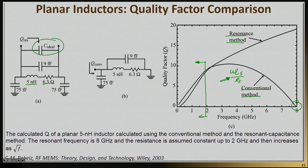At low frequencies the two Qs are roughly the same, since in both cases we are away from self-resonance, and this is a low-frequency approximation. But beyond that they deviate significantly. The most important deviation happens right at self-resonance, where they give two totally different messages. The conventional Q gives you a signal that at self-resonance the Q of the inductor is zero — meaning this inductor is useless there. On the other hand, the resonance method Q says you have actually built a resonator with a Q of 18.